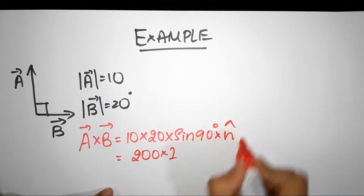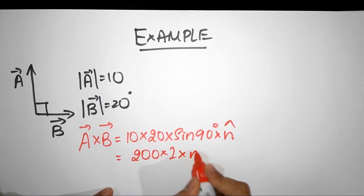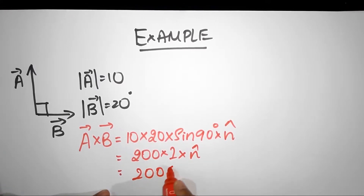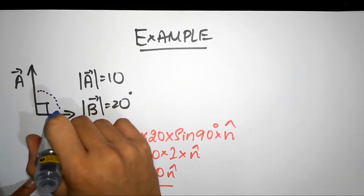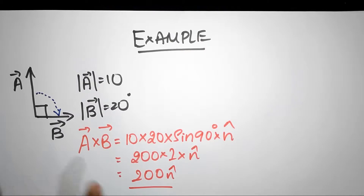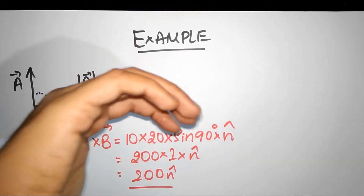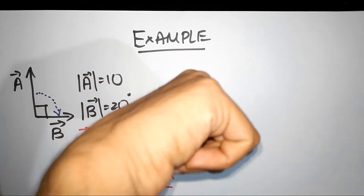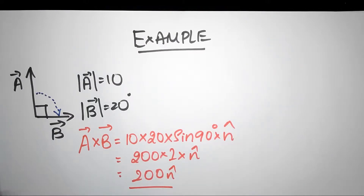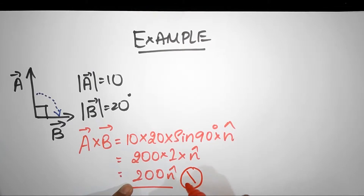Of course, I have to multiply by n-cap. What direction is n-cap now? A is trying to cross towards B, so A is rotating towards B. The rotation is clockwise, so use your right-hand rule and the thumb points into the book, into the page. Therefore, n-cap is into the page, and the way we show into the page is using a cross mark.